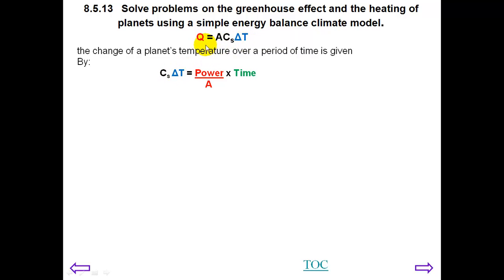We've divided both sides by A. CS delta T equals power times time divided by A. But the power divided by the area is the intensity.